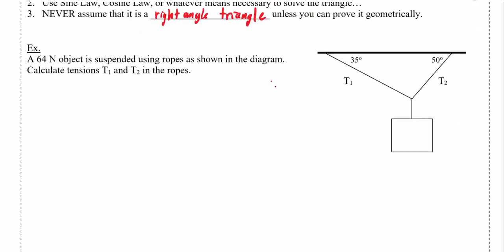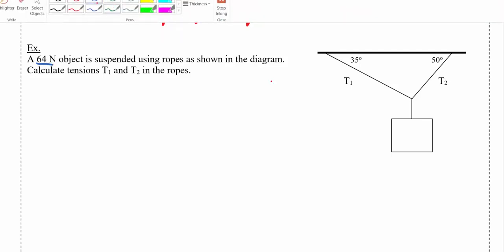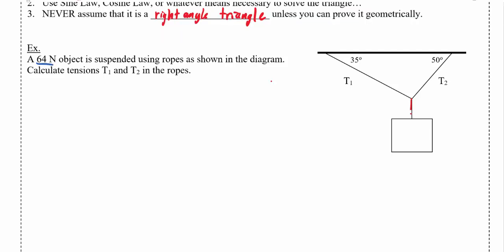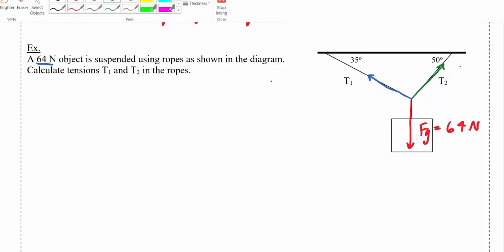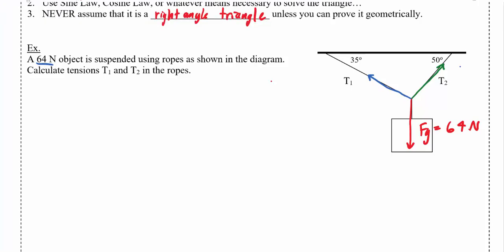Here's a similar problem solved a different way. A 64 Newton object is suspended using ropes as shown in the diagram. We're told the weight Fg is 64 Newtons. Similar to the last problem, I've got two tensions: a tension in this rope, T1, and a tension in this rope, T2.